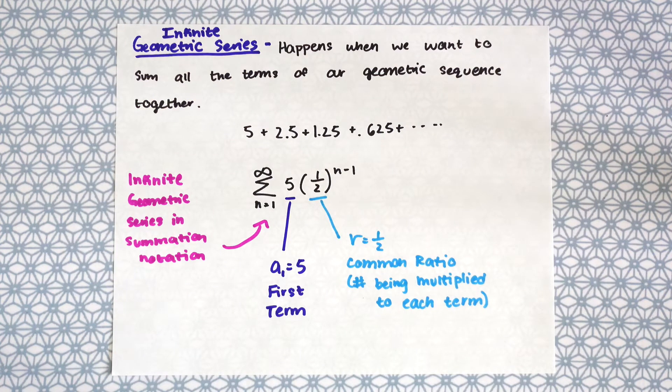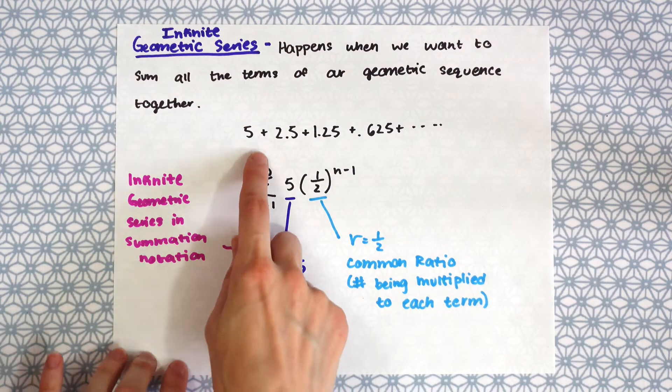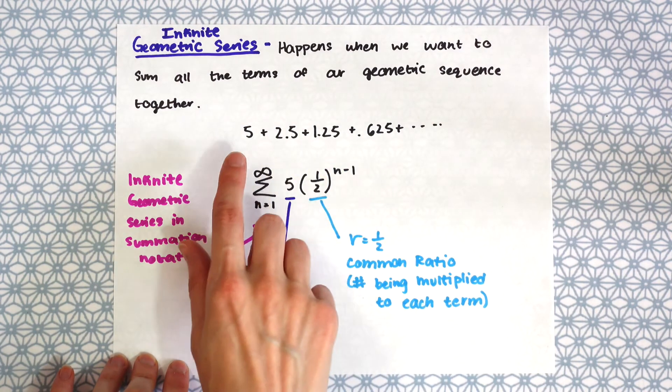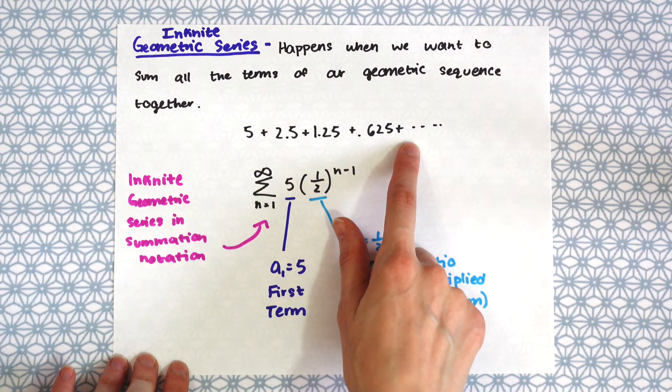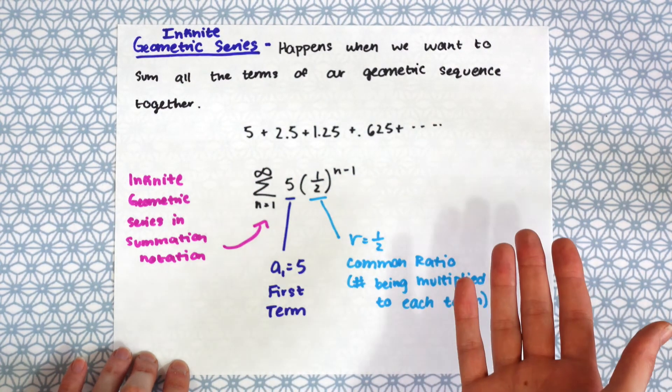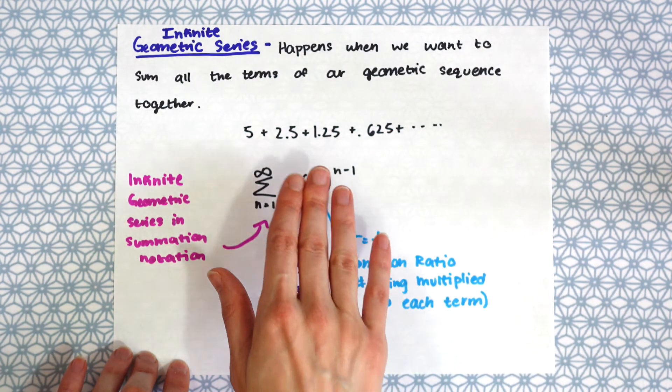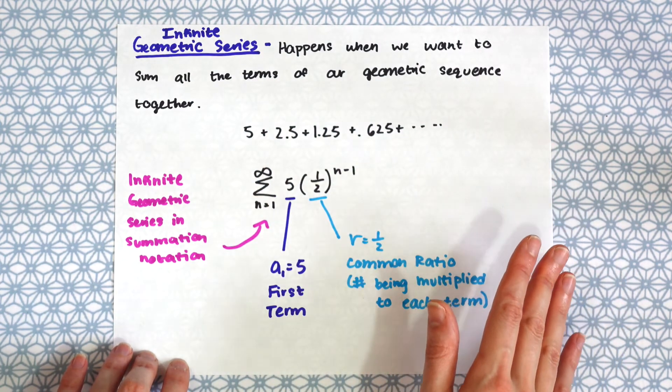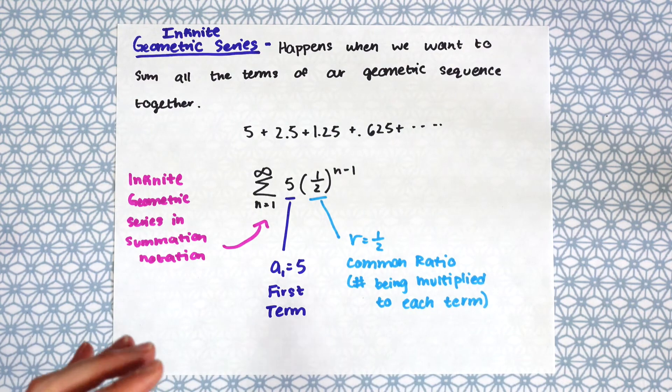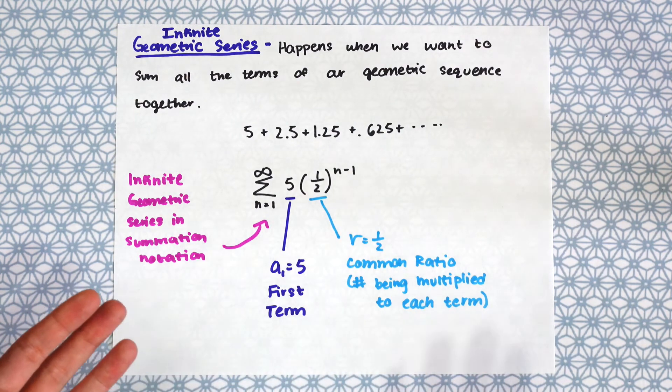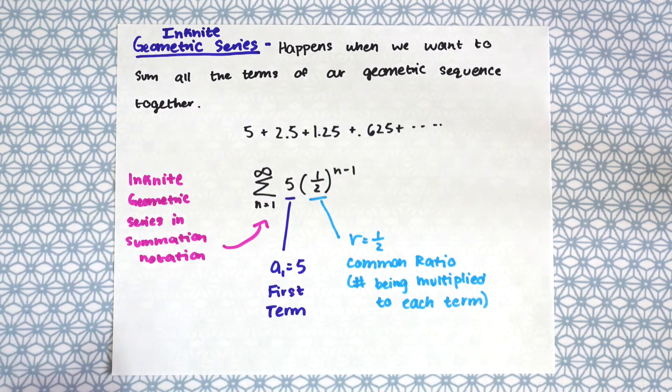So what happens when we want to sum all the terms of our geometric sequence together? That's where we get the infinite geometric series. So we have the same exact sequence we had before, 5, 2.5, 1.25, 0.625, but now we're adding all of them together all the way to infinity. So we're assuming this sequence goes on forever and we want to add all of those numbers together, this entire sequence together, and that's what makes us an infinite geometric series.